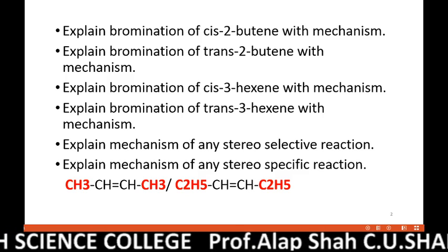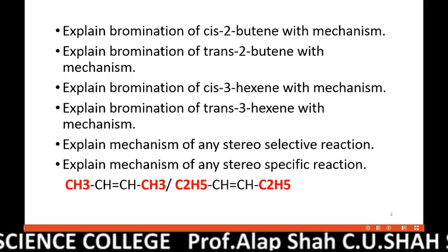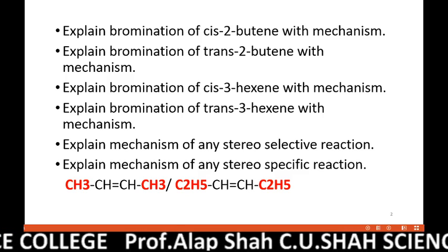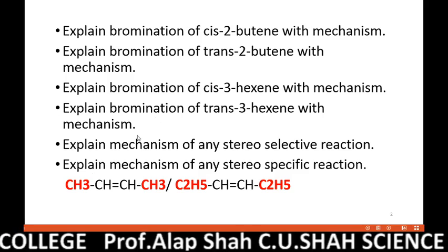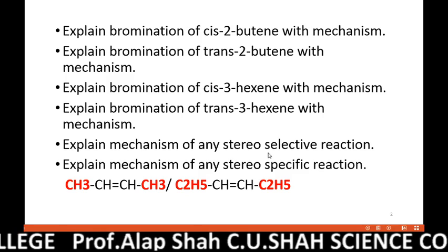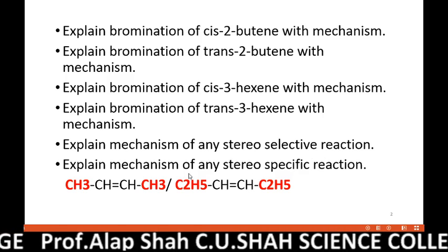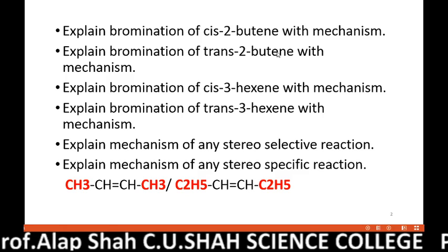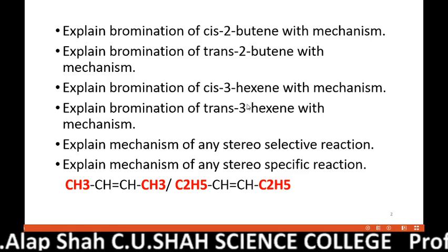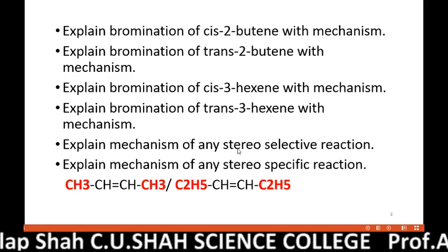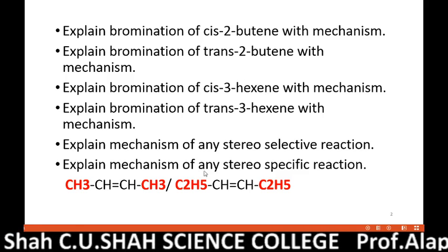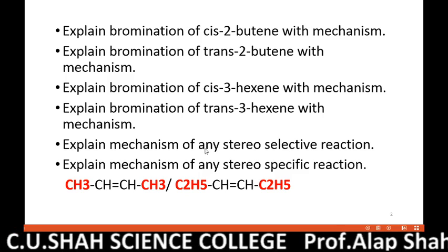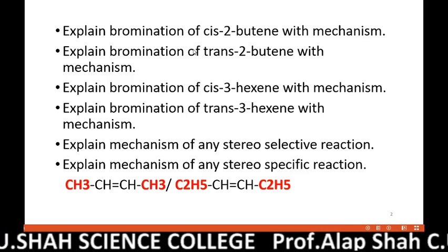Bromination of cis and trans-2-butene are both examples of stereoselective as well as stereospecific reactions. So the last two questions — explain the mechanism of any one stereoselective reaction or explain the mechanism of any one stereospecific reaction — can both be answered using this same example. These are the several ways questions may be asked, but you have to prepare only one answer.